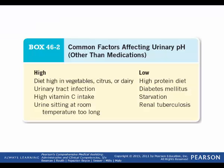Common factors affecting pH: if you have a high pH, you may have a diet high in vegetables, citrus, or dairy, a urinary tract infection may be present, you may be taking high vitamin C doses, or the urine may have been sitting at room temperature too long. If you have a low pH, you may be experiencing a high protein diet, you may have diabetes mellitus, you may be in a state of starvation, or you may have renal tuberculosis.